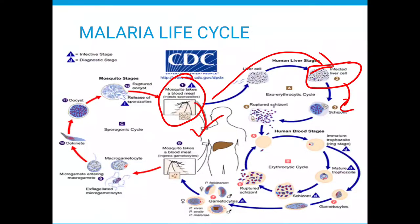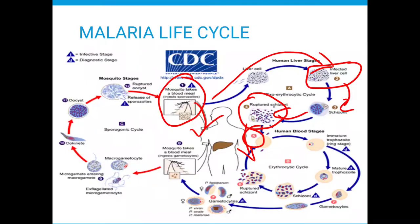The schizonts divide into segmented states and end up rupturing the host liver cell. When that host liver cell is ruptured, what is released is known as merozoites. These are the ones released at stage five.